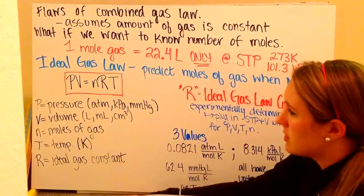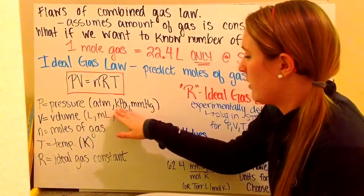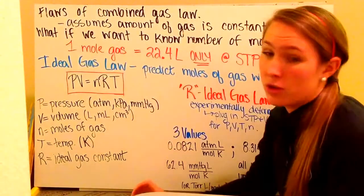Let's go through the variables. I have P, which is pressure. Pressure is in atmospheres, kilopascals, millimeters of mercury, or torr.